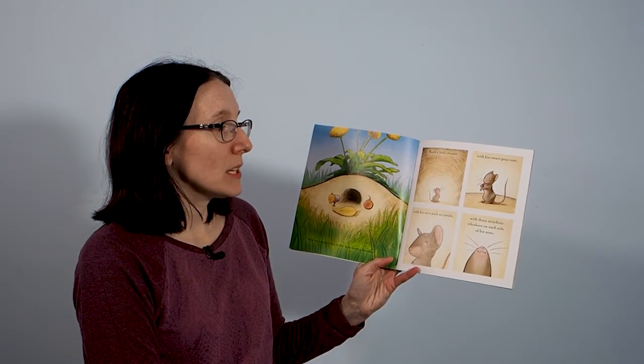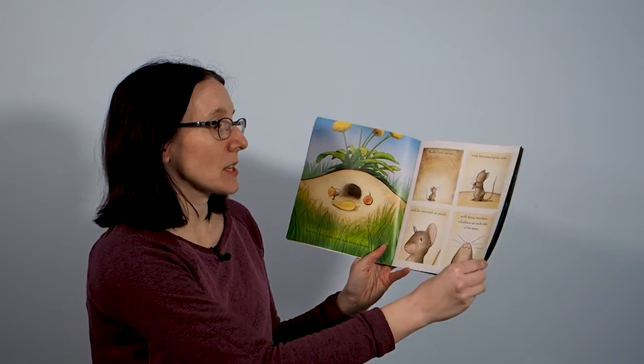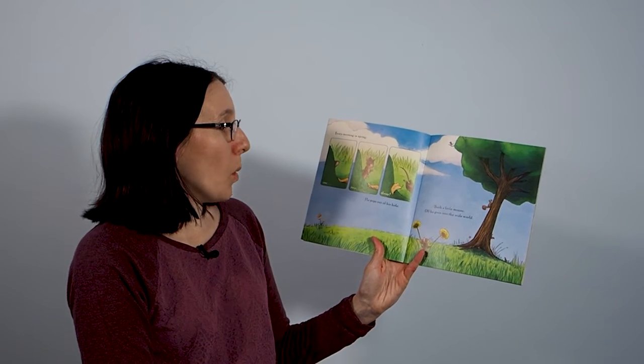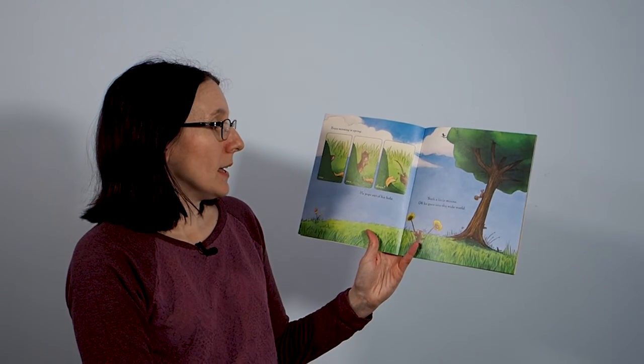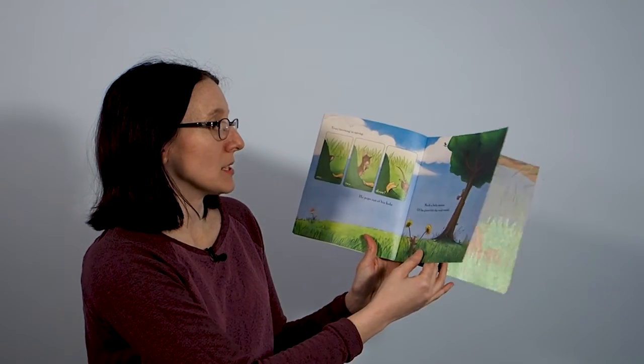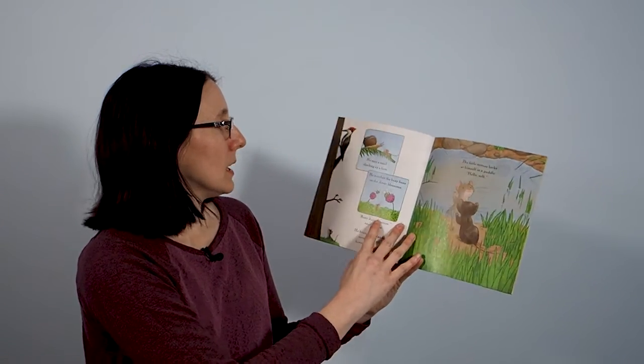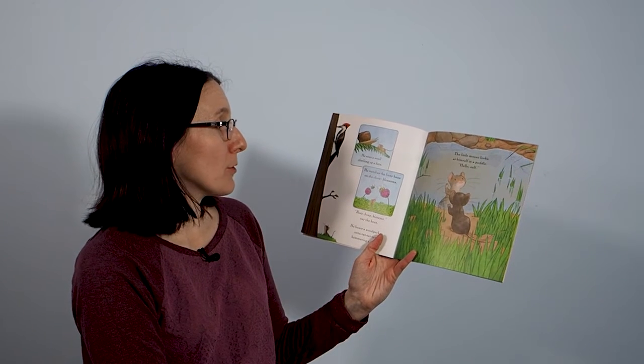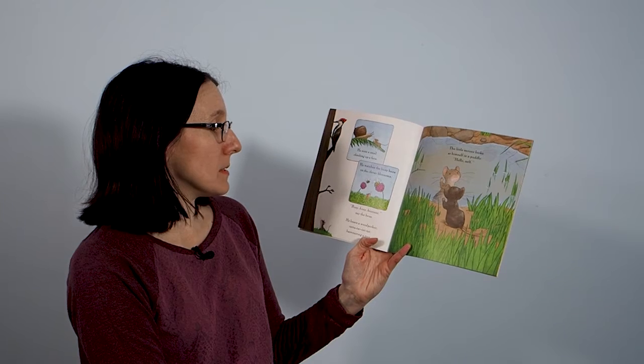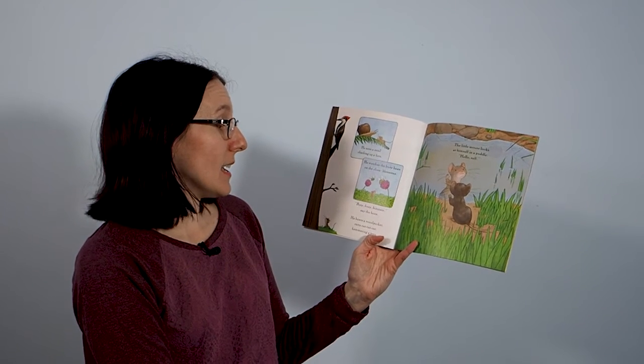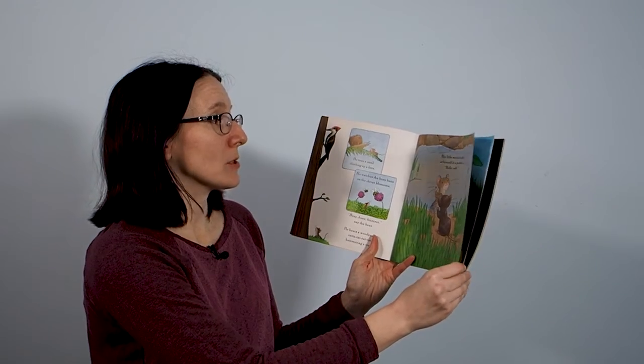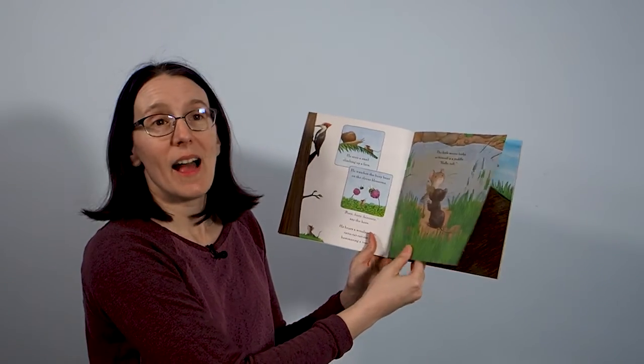Every morning in spring, one two three, he pops out of his hole, and such a little mouse off he goes into the wide world. He sees a snail climbing up a fern, he watches the busy bees on the clover blossoms. Busy busy, says the bees. He hears the woodpeckers rat-a-tat-tat on the hammering tree, and the little mouse looks at himself in a puddle. Hello self.